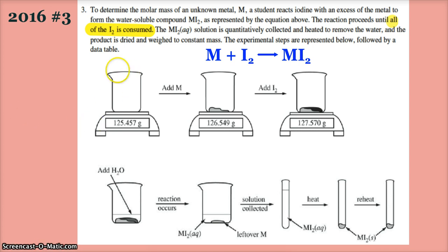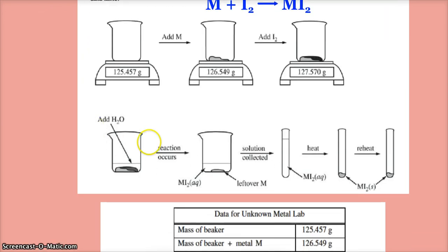I've got an empty beaker on the scale. I add the metal to it, so when I subtract that it would tell me how many grams of metal. Then I add iodine, so this minus this would give me how much iodine.